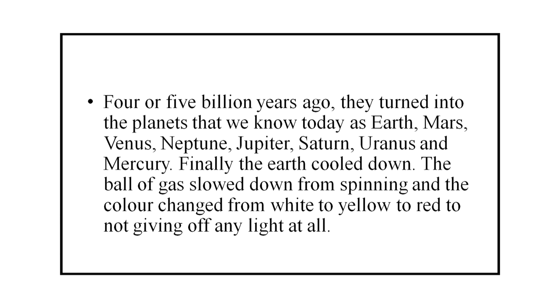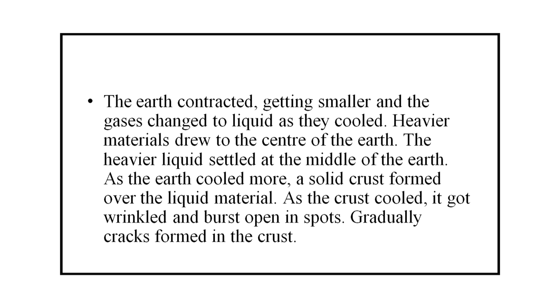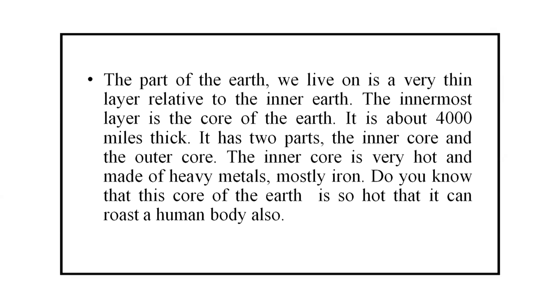Finally, the Earth cooled down. The ball of gas slowed its spinning and the color changed from white to yellow to red, to not giving off any light at all. The Earth contracted, getting smaller, and the gas changed to liquid as they cooled. Heavier materials drew to the center of the Earth. As the Earth cooled more, a solid crust formed over the liquid material, and as the crust cooled it got wrinkled and burst open in spots, gradually forming cracks. The part of the Earth we live on is a very thin layer relative to the inner Earth.